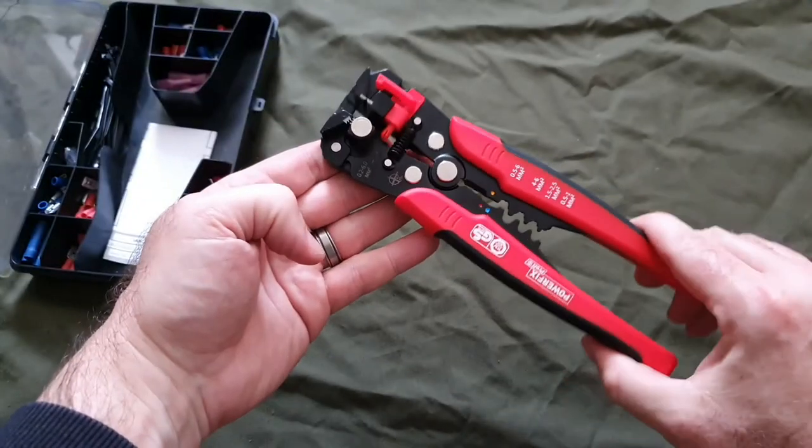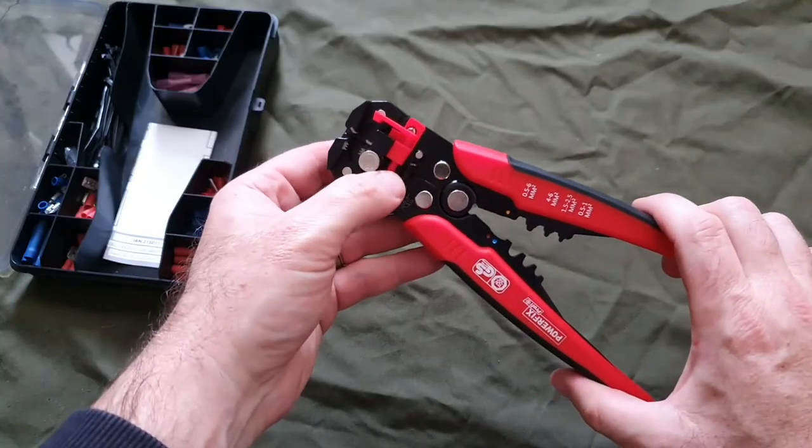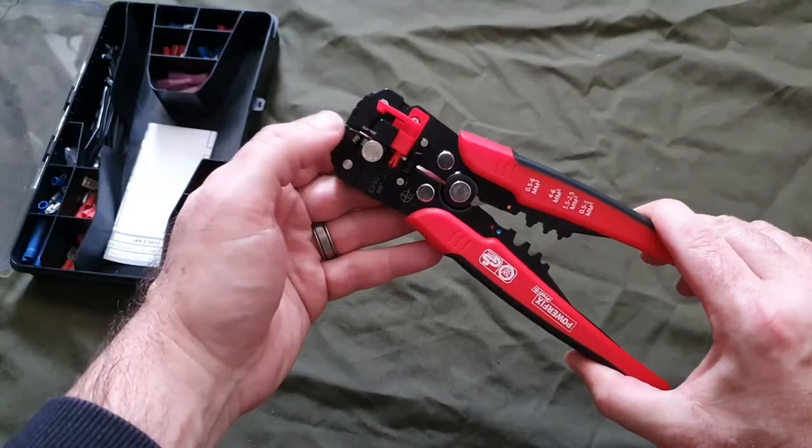Here we have the crimping tool itself. You can use this red bit and move it up and down to adjust how much wire you strip off, and these jaws here grip the wire.